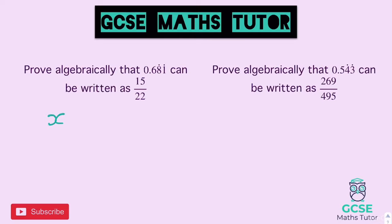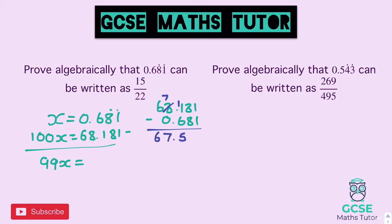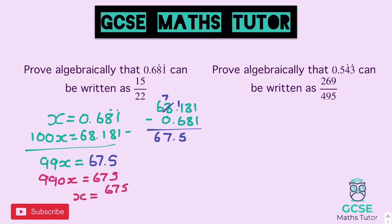For the first one, there are two recurring decimals, so x equals 0.681. Timesing by 100, we get 68.181. Taking those away from each other, we'll get 99x equals — doing the working out to the side: 68.181 take away 0.681. We've got to borrow: 11 take away 6 is 5, then 7 take away 0 is 7 and 6, giving 67.5. So 99x equals 67.5. Times both sides by 10: 990x equals 675. Turn that into a fraction: x equals 675 over 990.